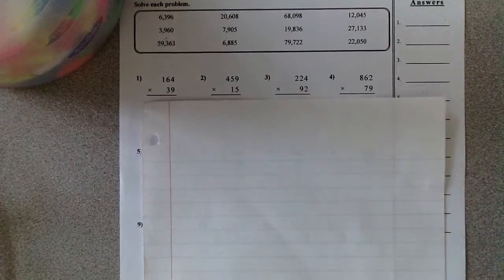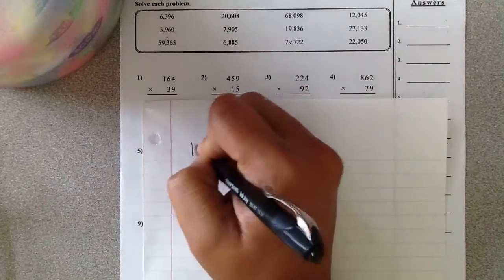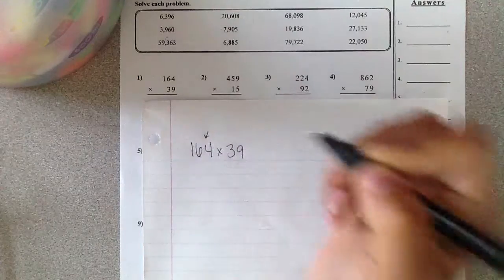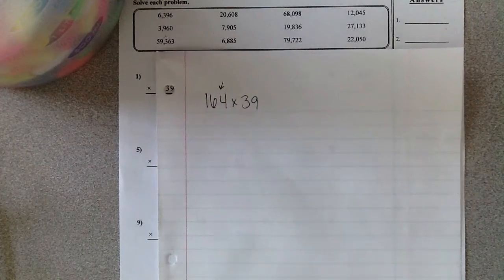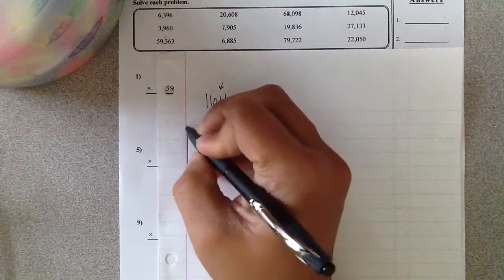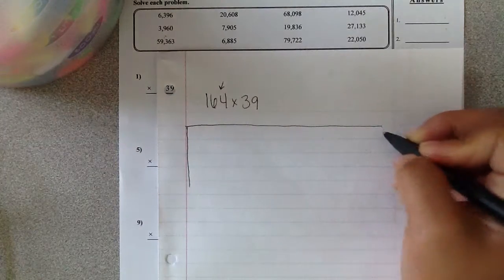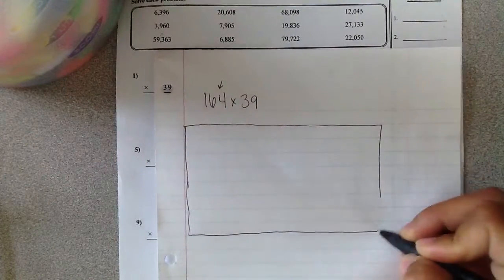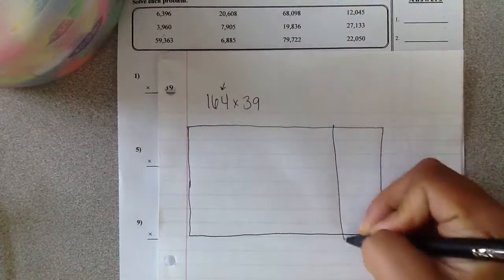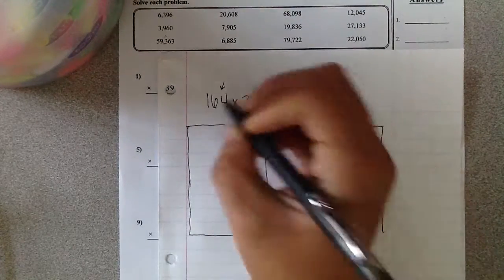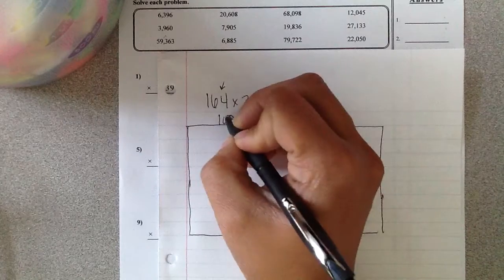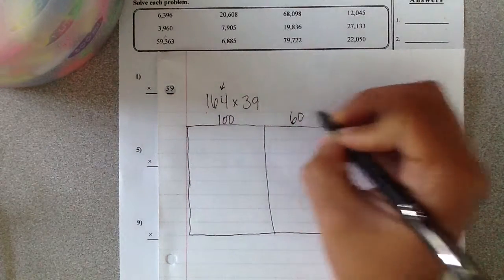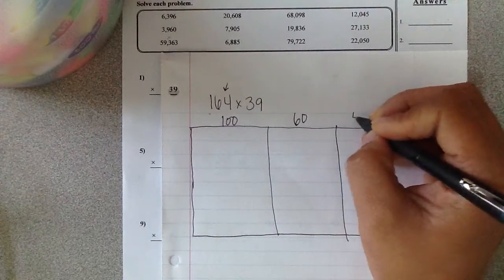For number one, I have 164 times 39. Since there are three place values in this number, that means I need a box that is big enough to have three place values going along up top. So I'm going to draw a longer rectangle for this problem.